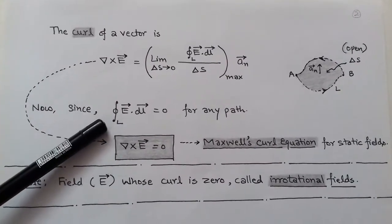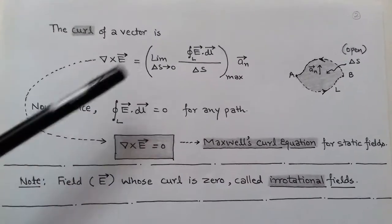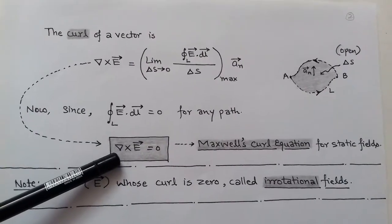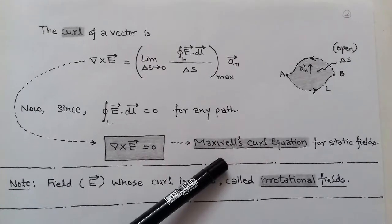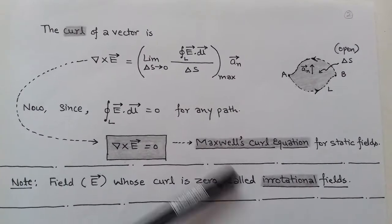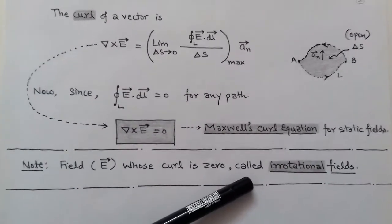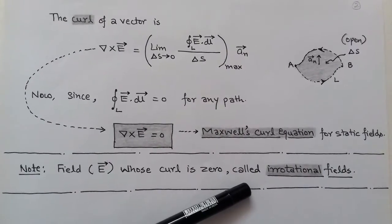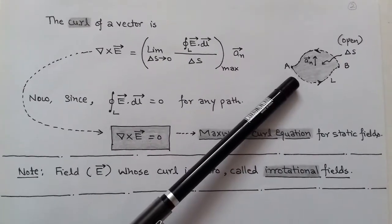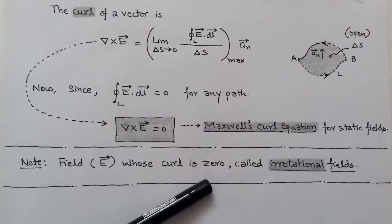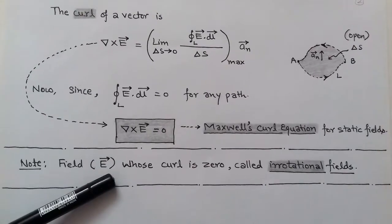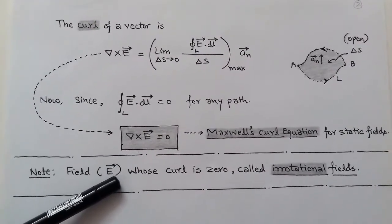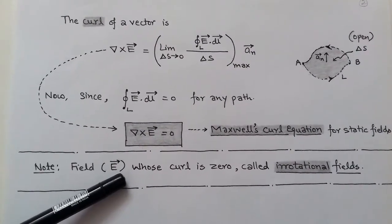Applying the condition that the closed line integral of E dot dL equals 0 into the definition of curl, we find that curl of E — that is, del cross E vector — is equal to 0. This is called Maxwell's curl equation for static fields. It holds for any closed path between two points. The fields whose curl is 0 are called irrotational fields. So this is Maxwell's curl equation for static electric field.